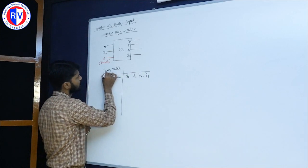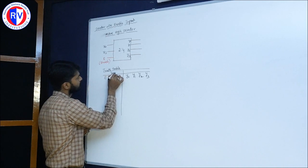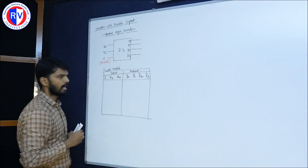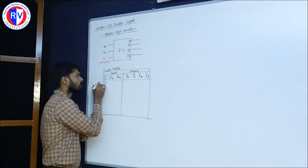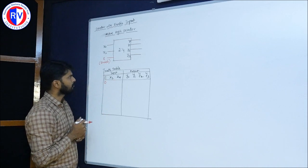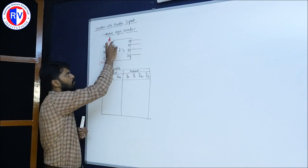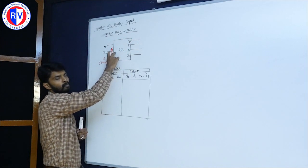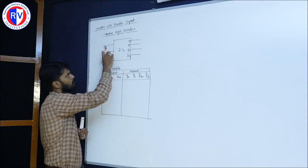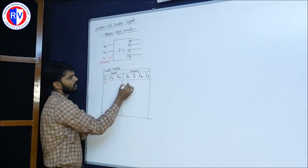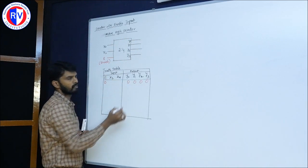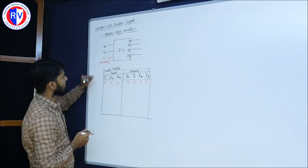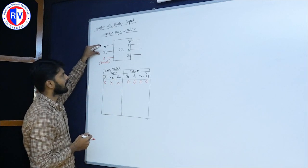These three are the inputs and these four are the outputs. If enable is 0, the decoder won't respect the input — the output doesn't care about the input. So y0, y1, y2, and y3 are all 0, and x0, x1 are not considered at all. If enable is 0, there is no respect for x0 and x1.